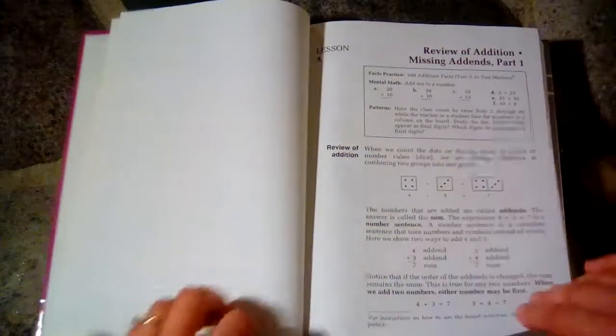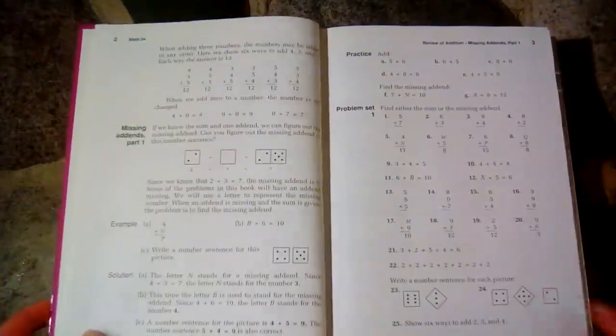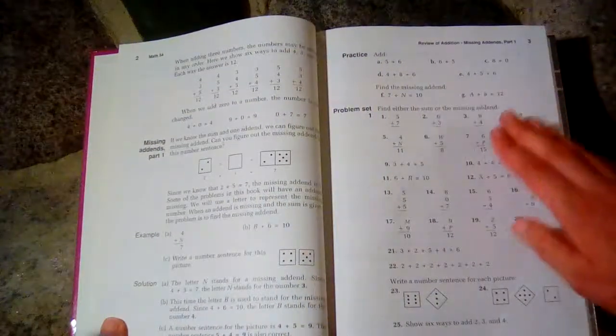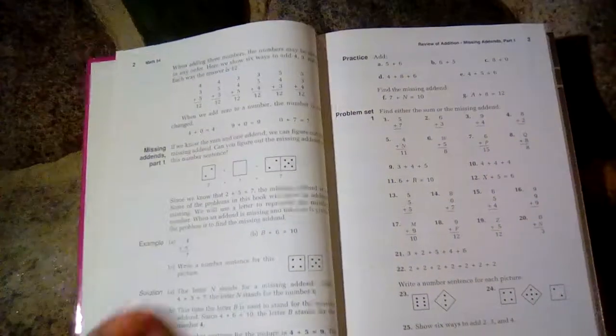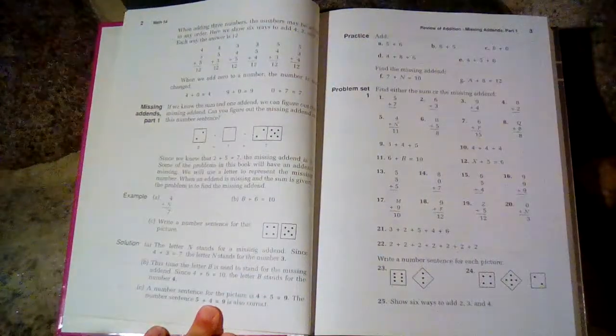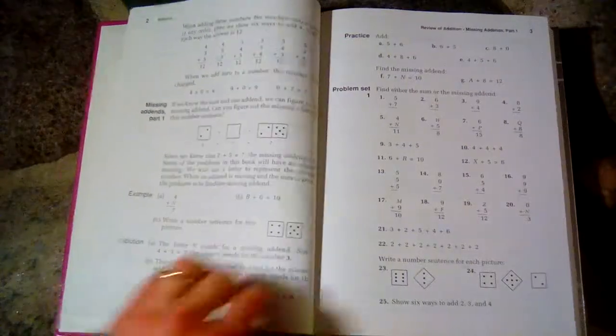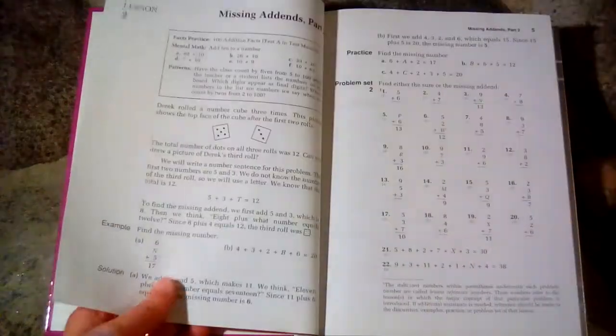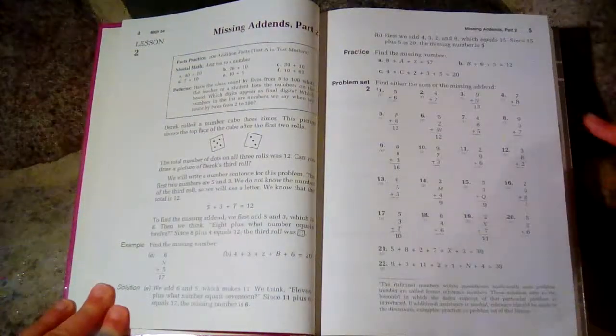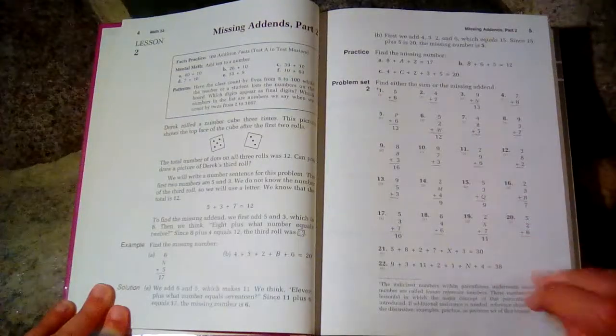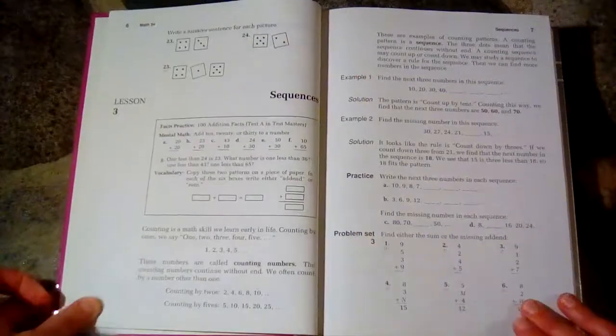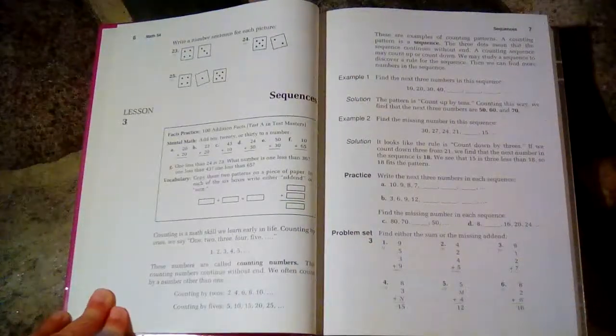Then we read together the lesson and then there's some practice problems and then your problem set. Another thing you'll notice is that there are many more problems in these books versus the previous books. Here we have 25 problems and it's like that throughout the book. Lesson two, you have the lesson, practice problems, and then 25 problems.